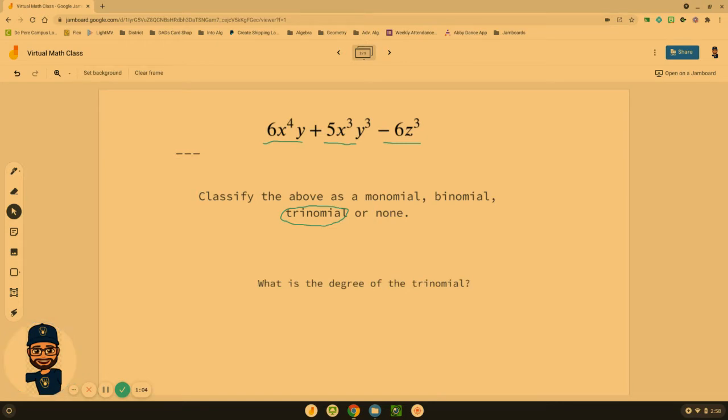Now the next part is to look at what is the degree of the entire trinomial. The degree relates to the variables in each term. Imagine for a moment this 6z³ - the long way to write that out would be six times z times z times z. How many variables would that have? Three. So we would say that term has a degree of three.